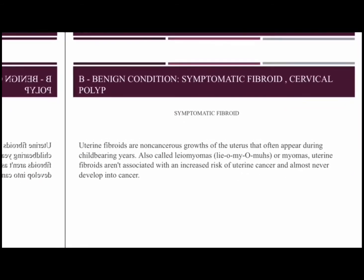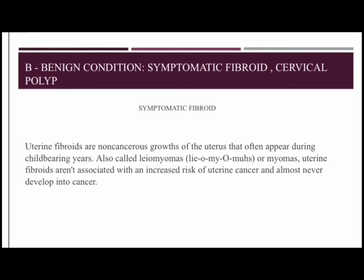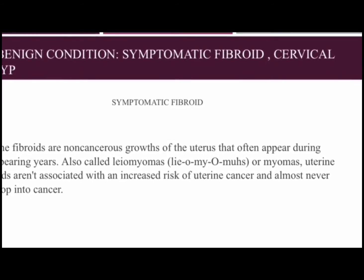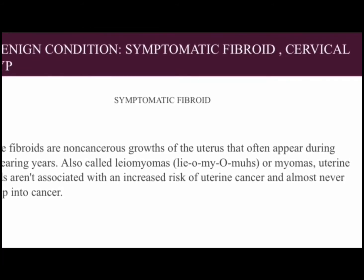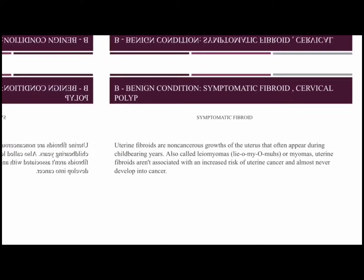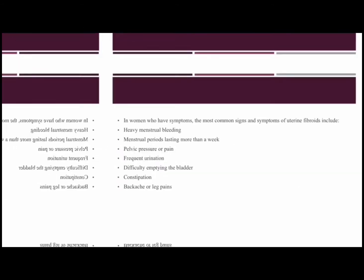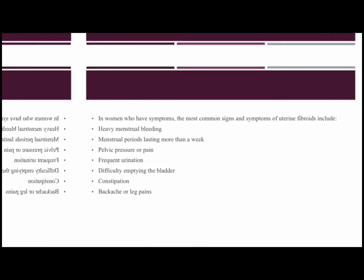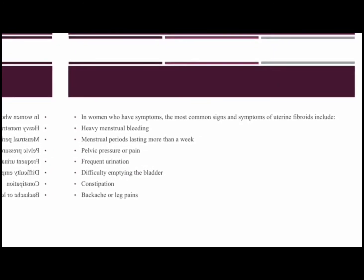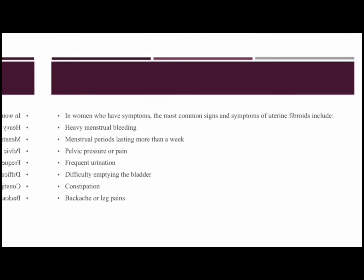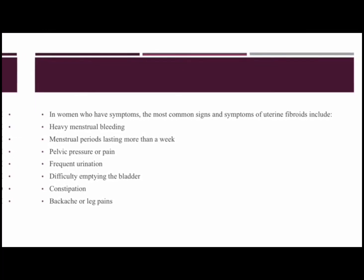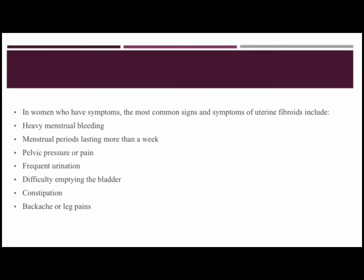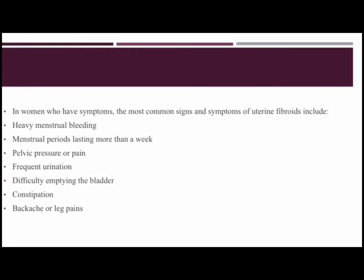Uterine fibroids are non-cancerous growths of the uterus that often appear during childbearing years. Also called leiomyomas or myomas, uterine fibroids aren't associated with an increased risk of uterine cancer and almost never develop into cancer. In women who have symptoms, the most common signs and symptoms of uterine fibroids include heavy menstrual bleeding, menstrual periods lasting more than a week, pelvic pressure or pain, frequent urination, difficulty emptying the bladder, constipation, and backache or leg pains.